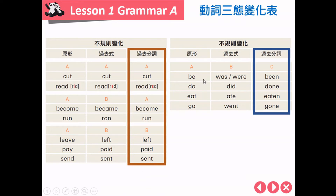右手边：be（was/were）, been；do, did, done；eat, ate, eaten；go, went, gone。在这一个系列之中，过去分词跟前面都不一样，自己单独成立。至于不规则过去分词的背诵，老师建议先把它养成语感，大声念出来，不见得一定要靠死背，多做练习也非常重要。